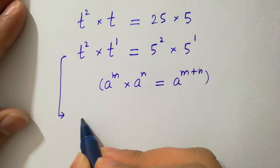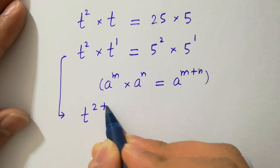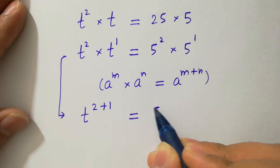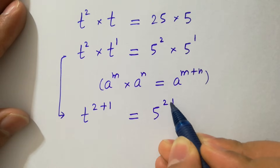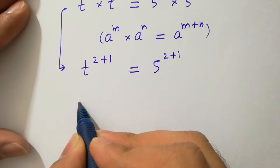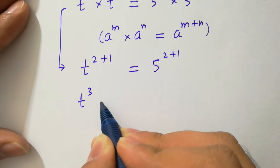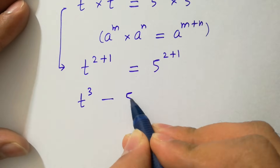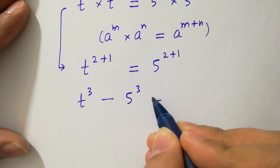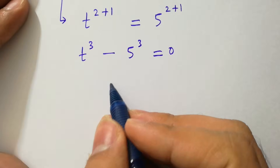Then it will be t to the power 2 plus 1 equal to 5 to the power 2 plus 1, which can be written as t to the power 3 minus 5 to the power 3 equal to 0.